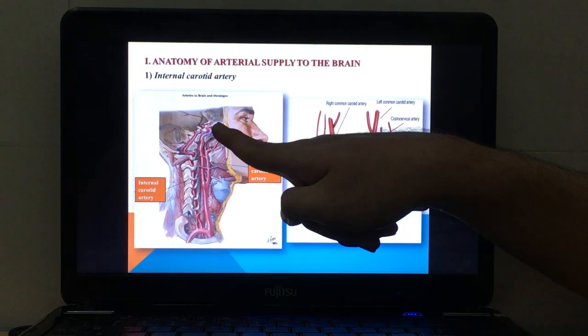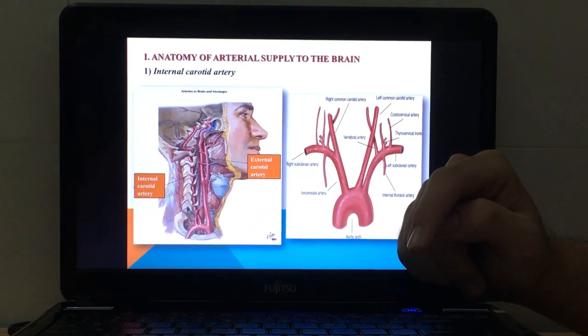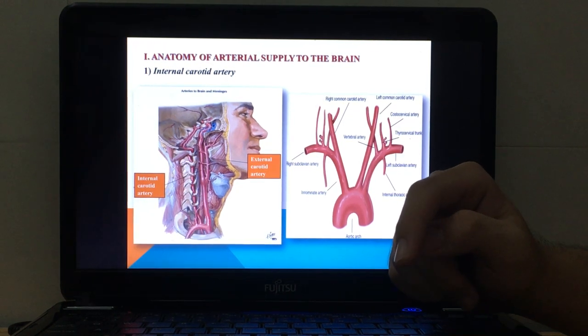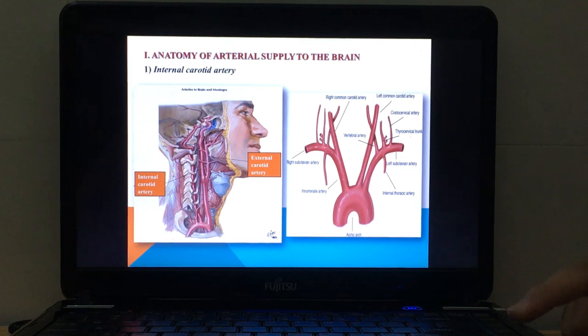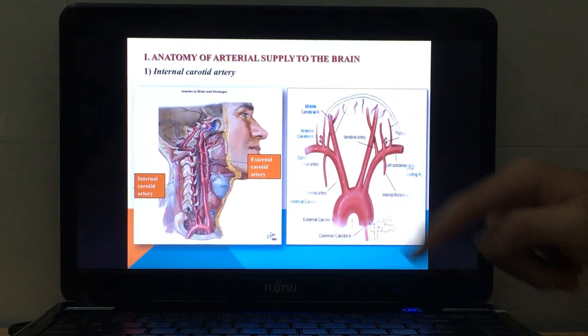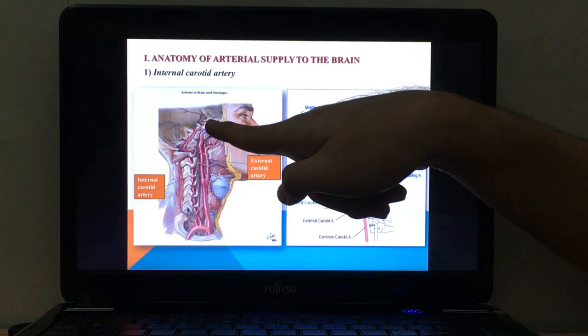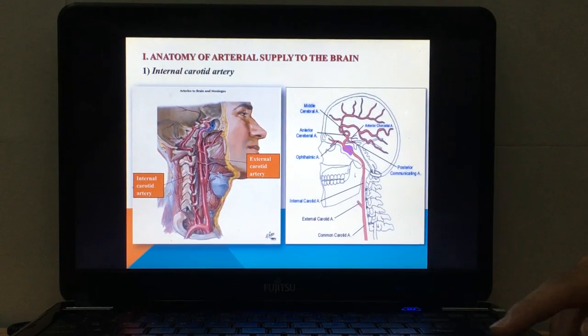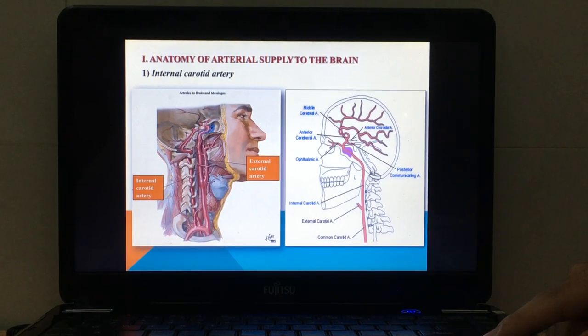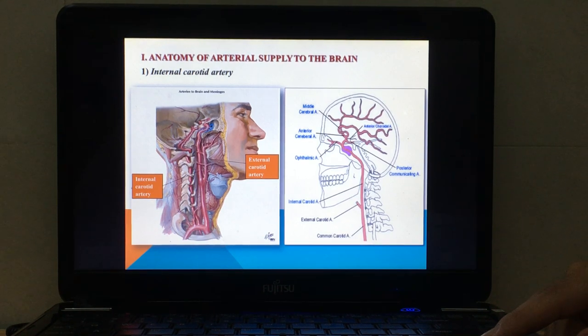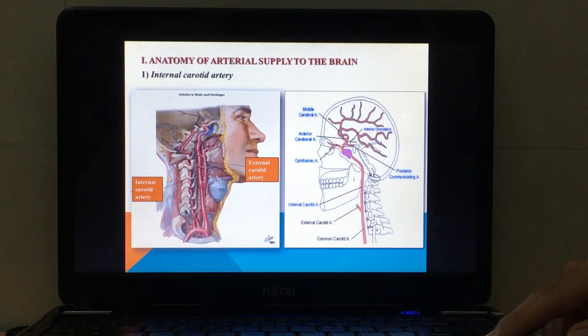They ascend to the base of the skull where they enter the carotid canal. Next, they pass anteriorly and medially through the cavernous sinus, the purple one and the blue one, to enter the cranial cavity and divide into terminal branches.